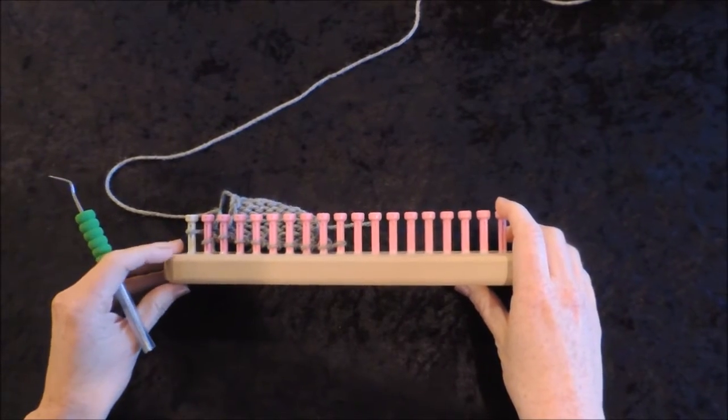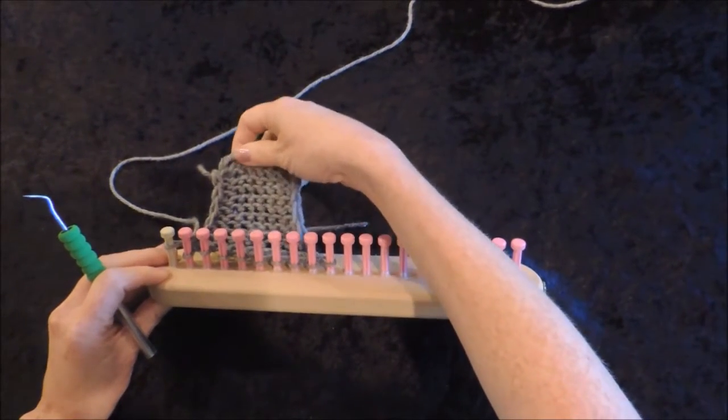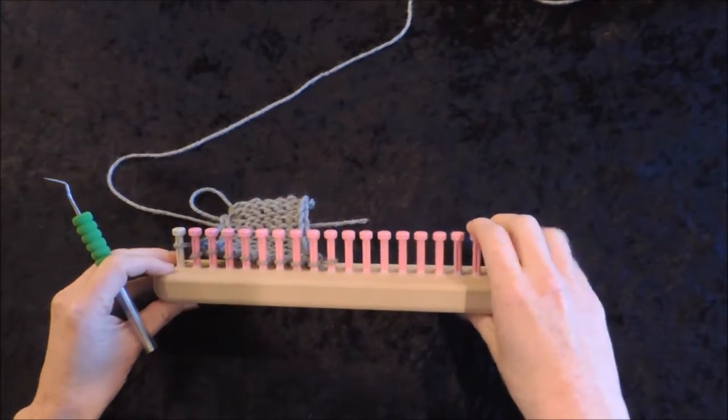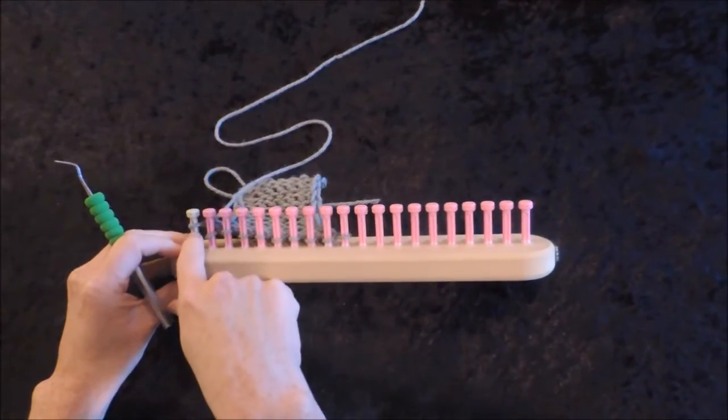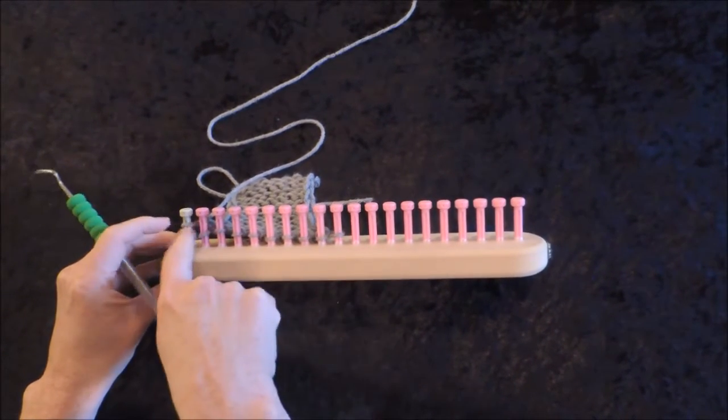For a basic flat panel bind off, if you're making a scarf or a blanket, you want to have your working yarn coming from the one you last slip stitched. So you've gone all the way across.